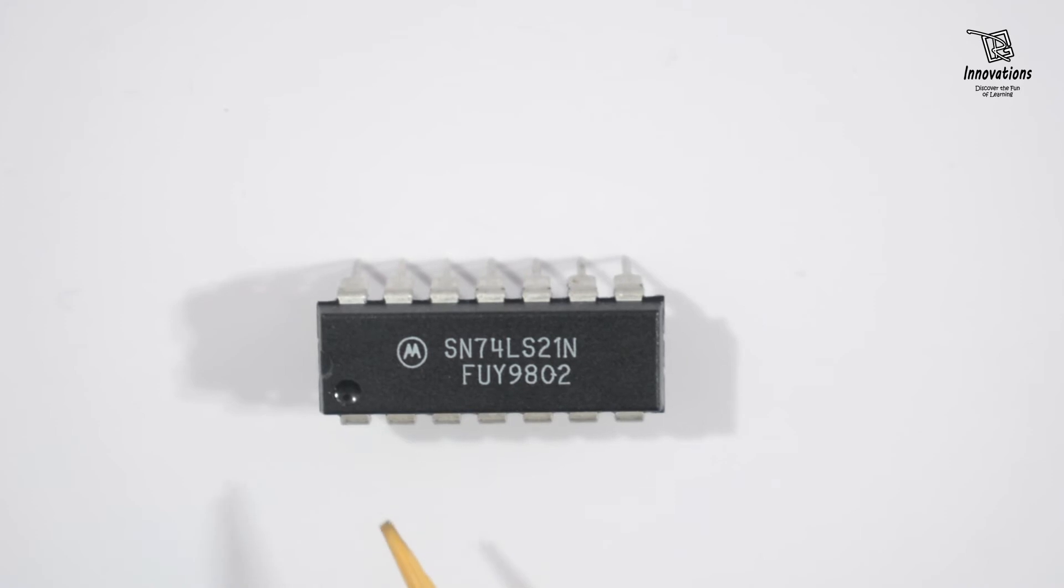As shown in the schematic, pins 1, 2, 4, and 5 are inputs of the segment 1 AND gate, and pin 6 is the output. Pin 3 is no connection, pin 7 is ground, and pin 14 connects to positive power supply. Now we'll test the IC.